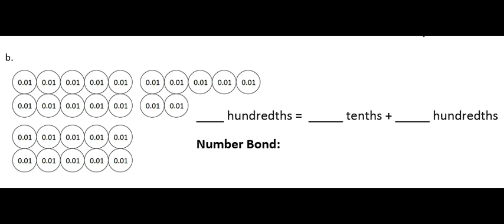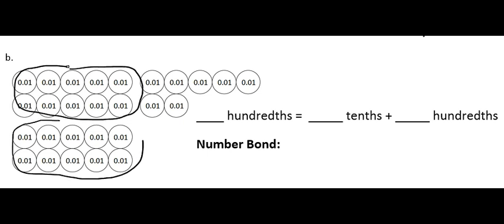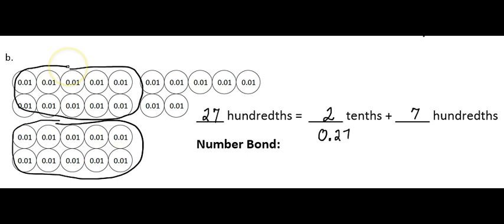Here's another example. Again, we'll start by circling 10 hundredths to make tenths — here's a group of 10, and here's a group of 10. Altogether I have 27 hundredths: 10 in the first group, 10 in the second group, and 7 more. So we have 27 hundredths, equal to two tenths — the two groups I circled — and 7 more hundredths. Now let's make our number bond. 27 hundredths in decimal form would be 0.27. The 2 represents the two tenths, the two groups here; the 7 represents 7 hundredths, the extra 7 hundredths off to the side.